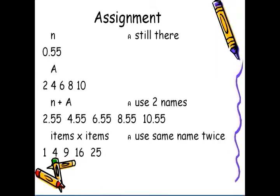If we look, we now have n, which contains 0.55, and capital A, which contains a list of five numbers. Those two names can be used together in an expression and combined to give another result.